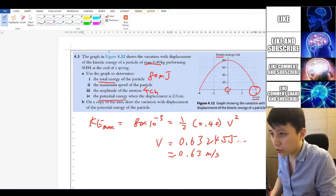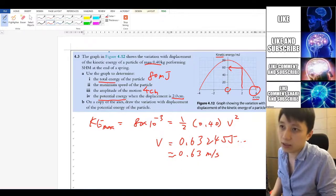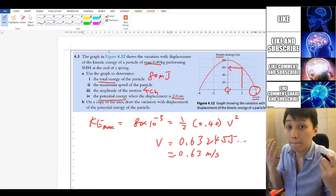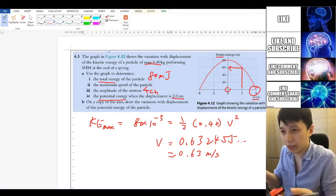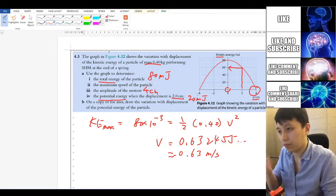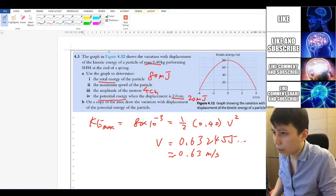Okay. Potential energy when displacement is at 2 cm. So let's take a look. Here at 2 cm, you have 60 millijoules for KE. So as you know, 80 is the total. Then that means 80 minus 60. That means 20 millijoules will be the amount for potential energy.